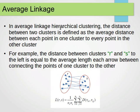In average linkage hierarchical clustering, the distance between two clusters is defined as the average distance between each point in one cluster to every point in the other cluster. The distance between clusters r and s equals the average of all arrows connecting points of one cluster to the other — that is, one over n_r times n_s, where n_r is the number of points in cluster r and n_s is the number of points in cluster s.